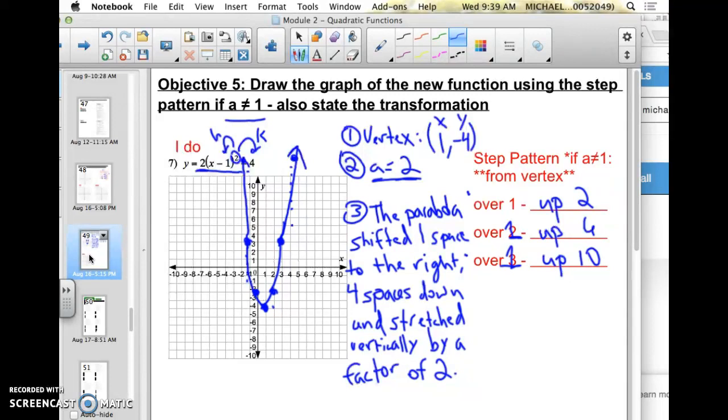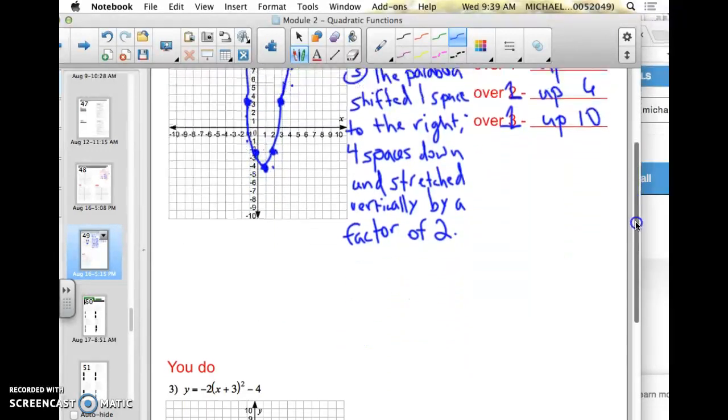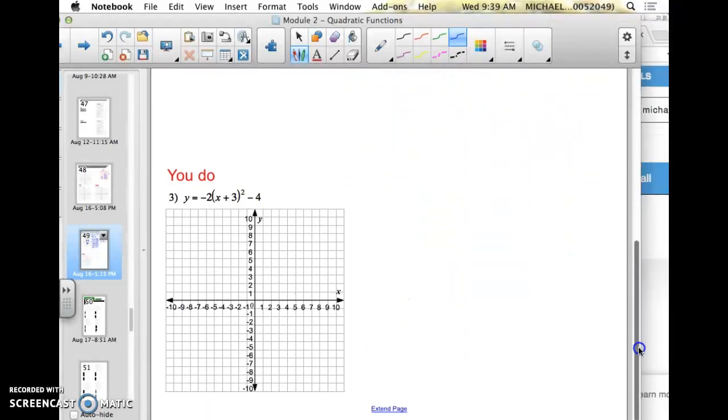So that's the process of drawing a quadratic function when the a-term is not 1. All it does is make the graph skinnier in this case. So go ahead and pause the video and try your example on your own.